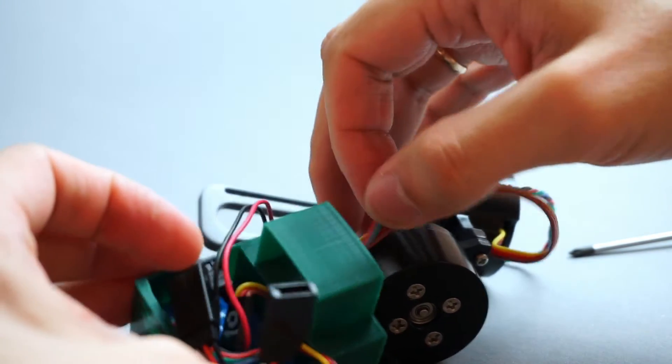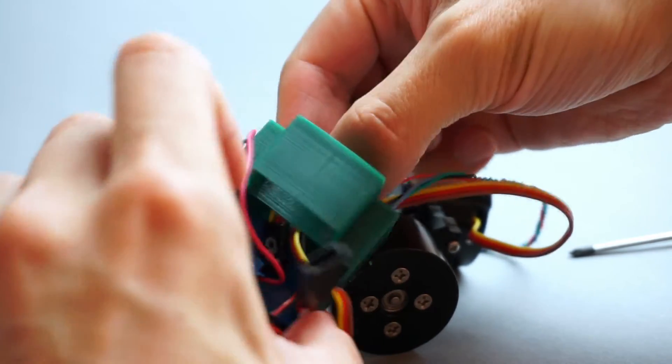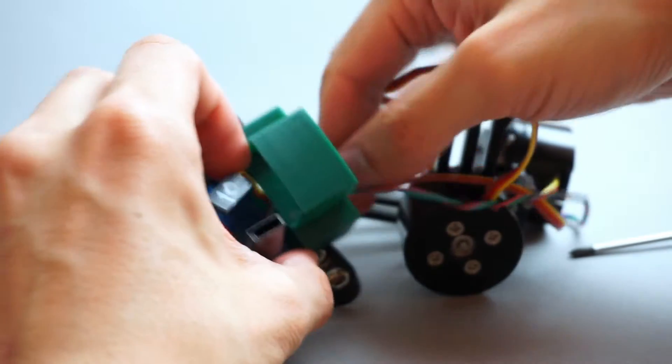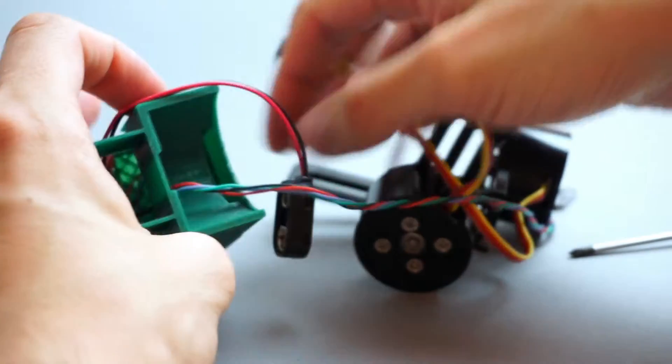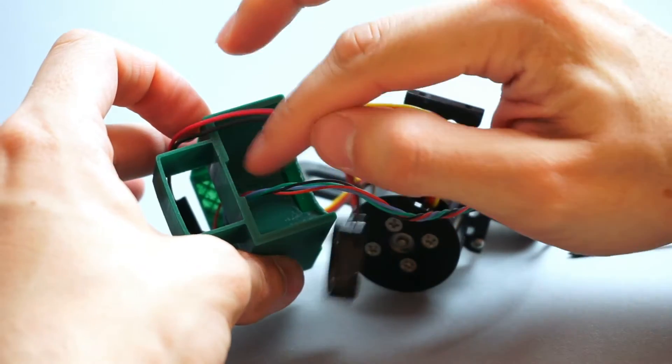Okay, cool. So now we can remove these wires. As you can see here, I have a hole for wiring.